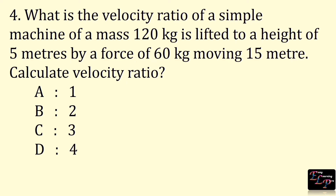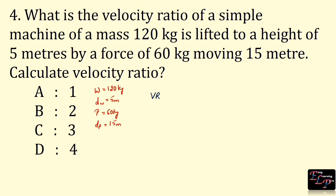What is the velocity ratio of a simple machine if a mass of 120 kg is lifted to a height of 5 meters by a force of 60 kg moving 15 meters? Given: load = 120 kg, distance moved by load = 5 m, effort = 60 kg, distance moved by effort = 15 m. Velocity ratio is given by distance moved by effort divided by distance moved by load.